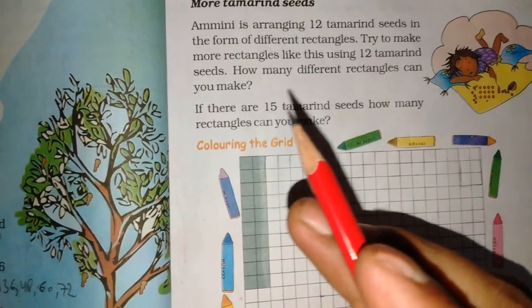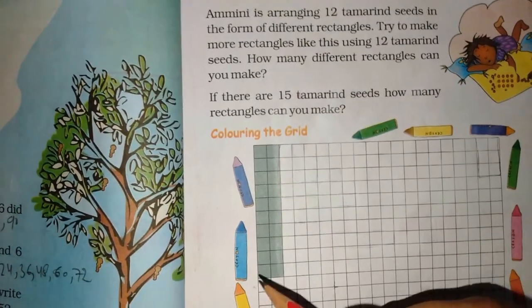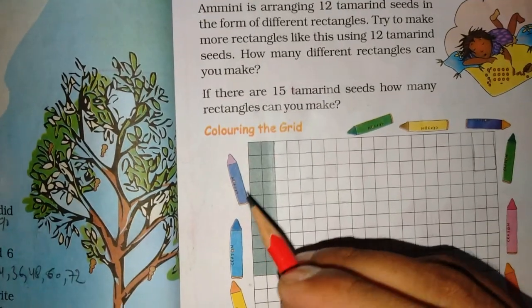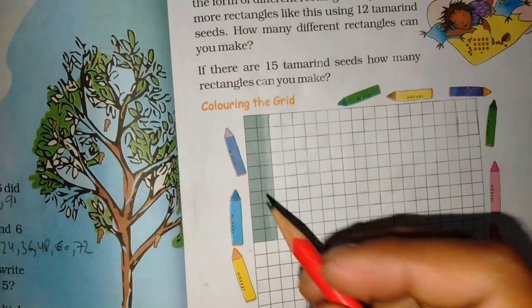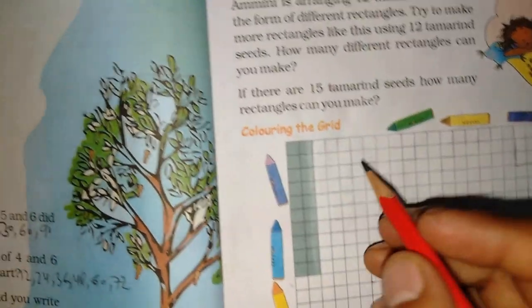They are saying that you have to make more rectangles. How many boxes can you make? 6x2? 1x6, 1x12. Very good.